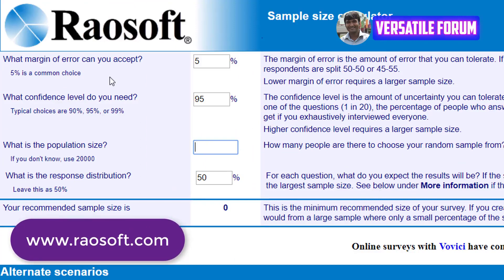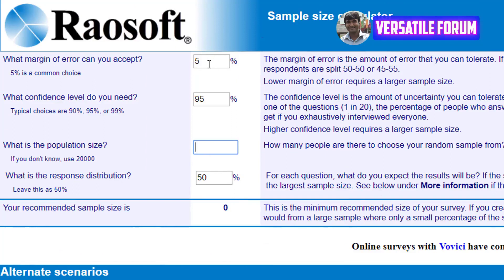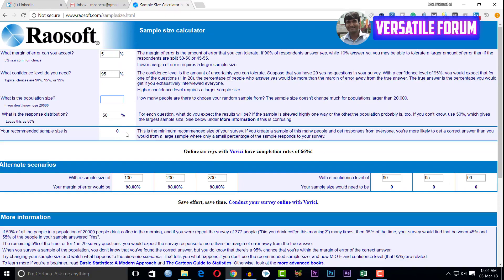First, what margin of error you can accept — this is the five percent error level, which is a very minimum level of error. This is 95 percent confidence level. Then we input our desired population size. When we put our desired population size, it automatically calculates our sample size and the figure is shown here.